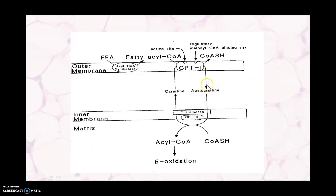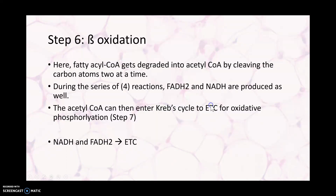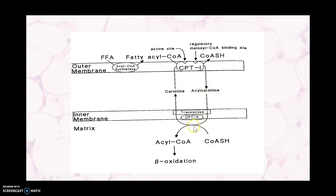Acyl-carnitine comes into the inner mitochondrial matrix, and then the translocase complex — CPT2 — removes the fatty acyl portion from carnitine, leaving the carnitine behind. That acyl group is then reattached to a CoA within the matrix of the mitochondria. The carnitine that is left over is returned to the cytosolic side of the cell in exchange for another acyl-CoA carnitine. That's how that loop works. Next we head into beta oxidation.